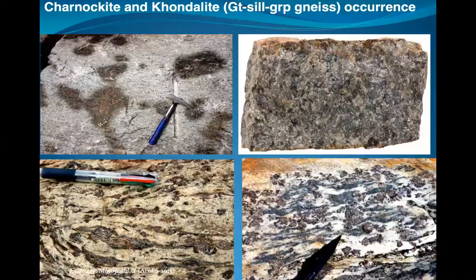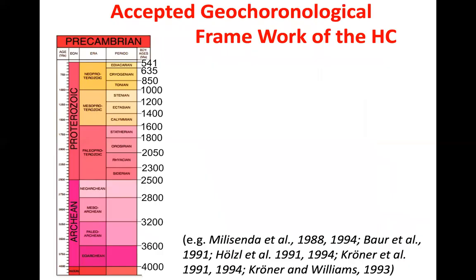Considering the ages of these Highland Complex rocks — the geochronological data — the rocks were formed in different time periods in Earth's history. This geological timescale shows the Precambrian era divided into two parts: the Archaean and the Proterozoic. The Archaean represents the origin of the Earth, about 4.5 billion years ago, up to 2500 million years; after that comes the Proterozoic, from 2500 to about 500 million years.